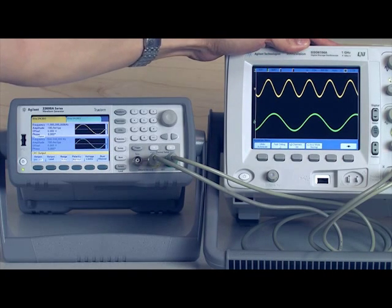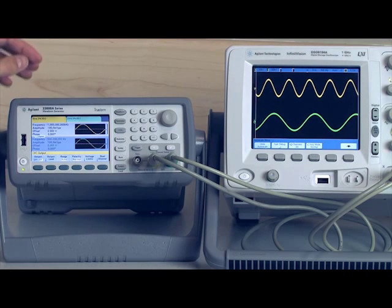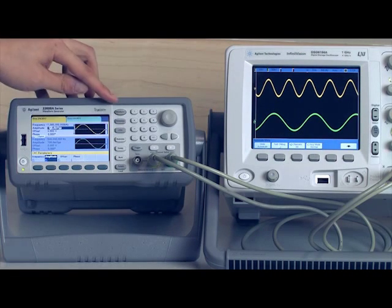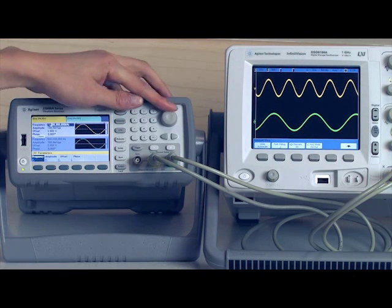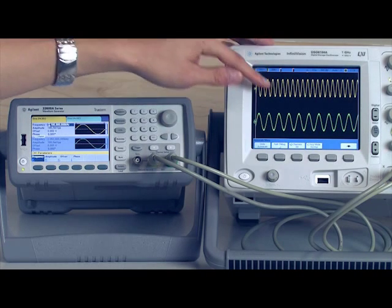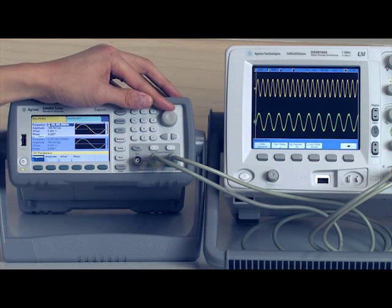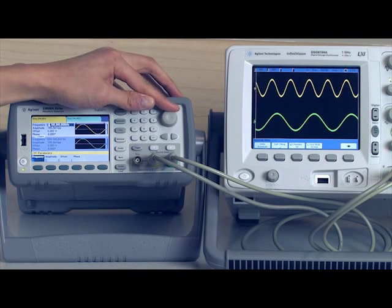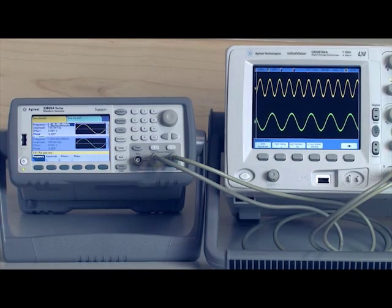Over here on the scope, you can actually see that visually. So as I change the frequency of channel one, you can see that channel two is about half of what channel one is, no matter where I go. So that's frequency coupling.